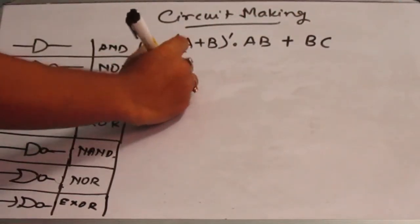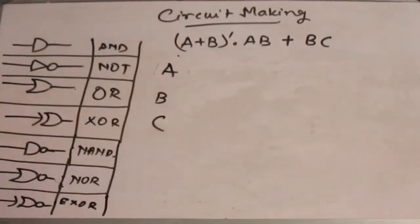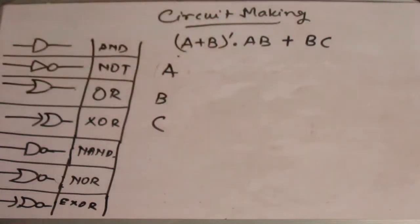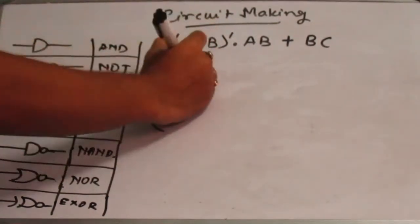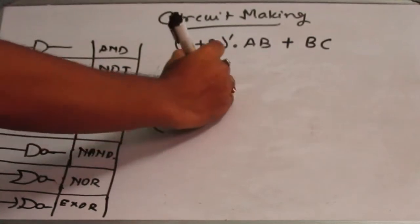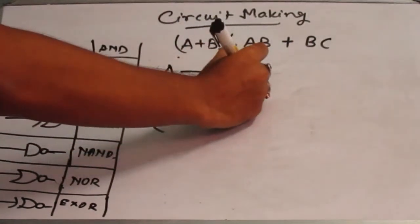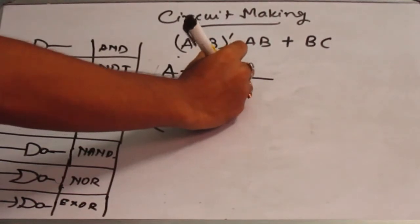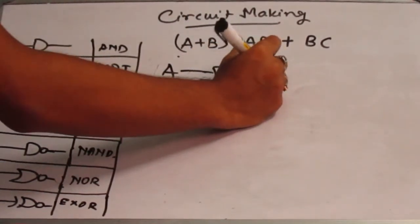So write A, B, and C. Now we will see that A plus B is done. Plus means OR, so we are going to OR these two with the OR gate. Now this will give A plus B.